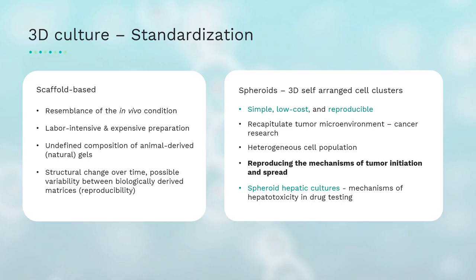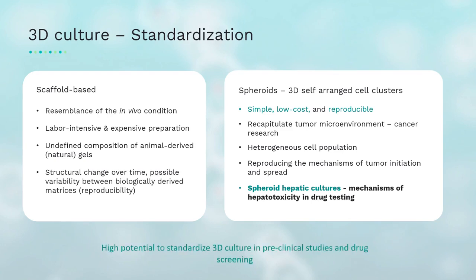3D spheroids are not only useful in cancer research. Three-dimensional spheroids for hepatic culture have emerged as a promising tool to assess mechanisms of hepatotoxicity, demonstrate enhanced liver phenotype, metabolic activity, and stability in culture — results not obtainable with conventional 2D hepatic models. Spheroids have high potential to standardize 3D culture in preclinical studies and drug screening.